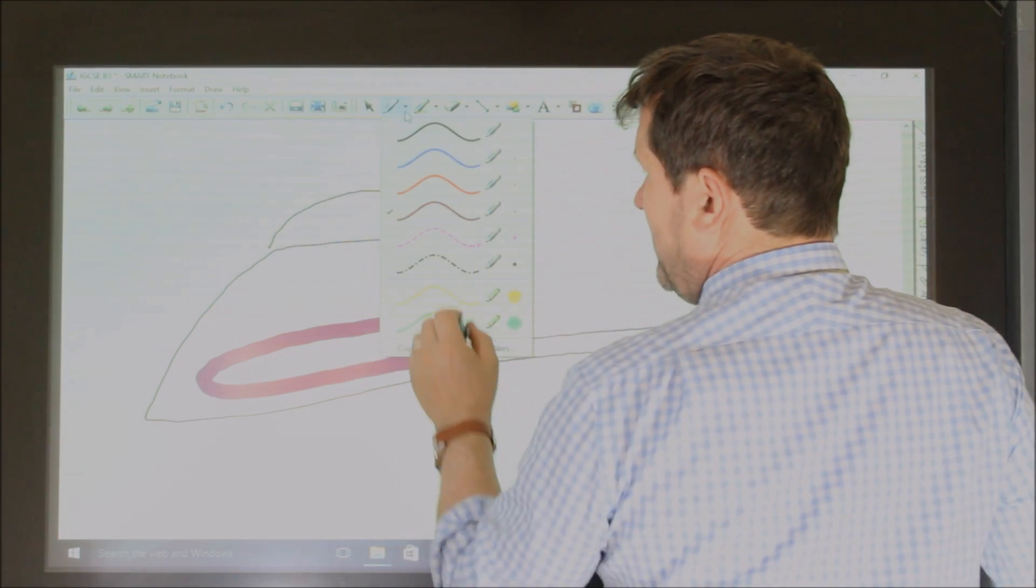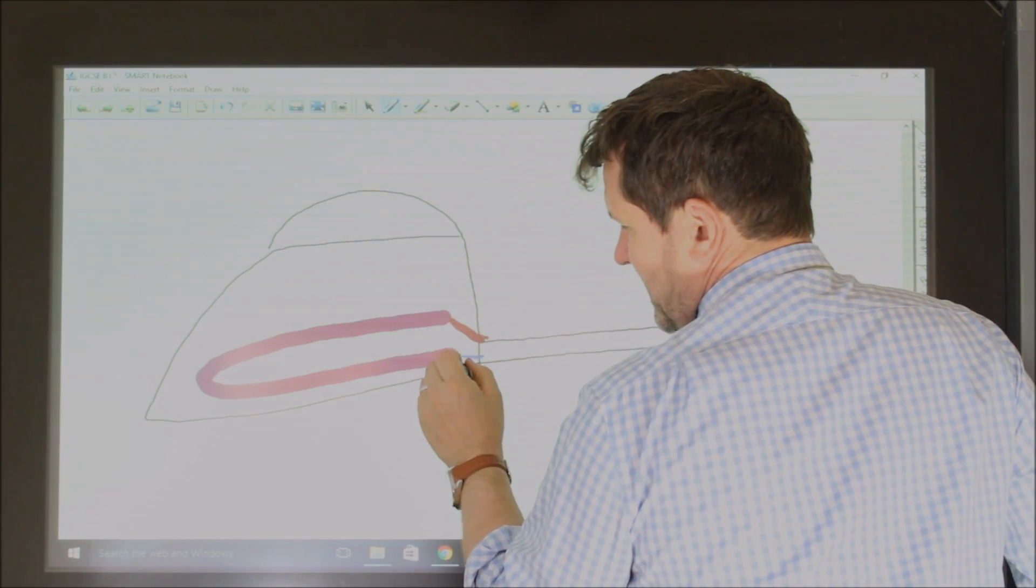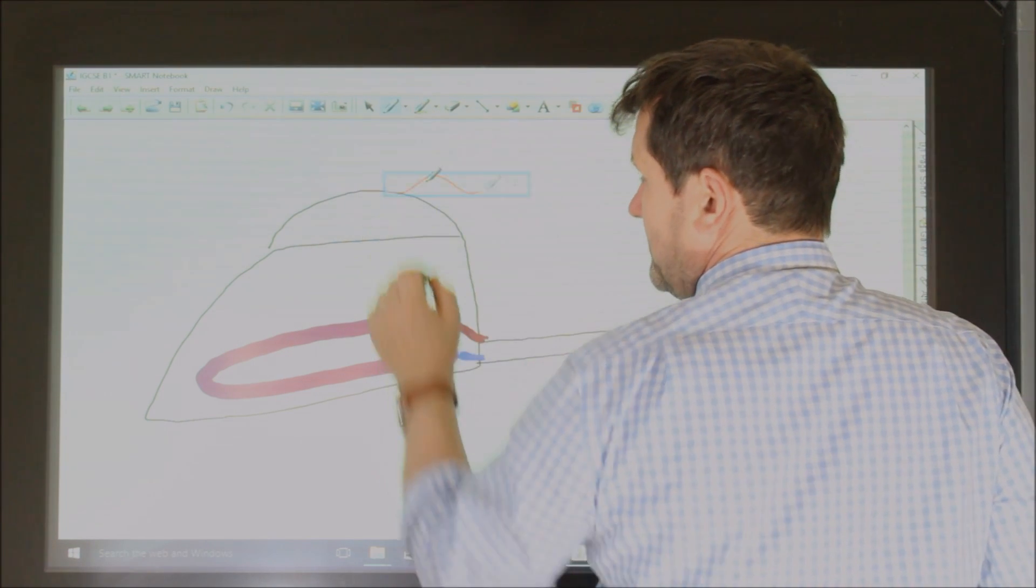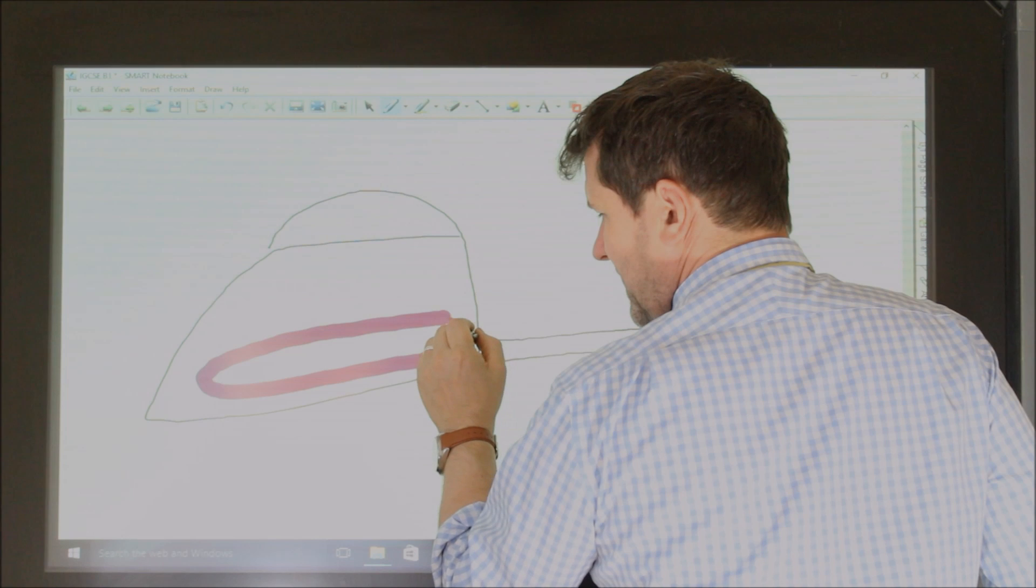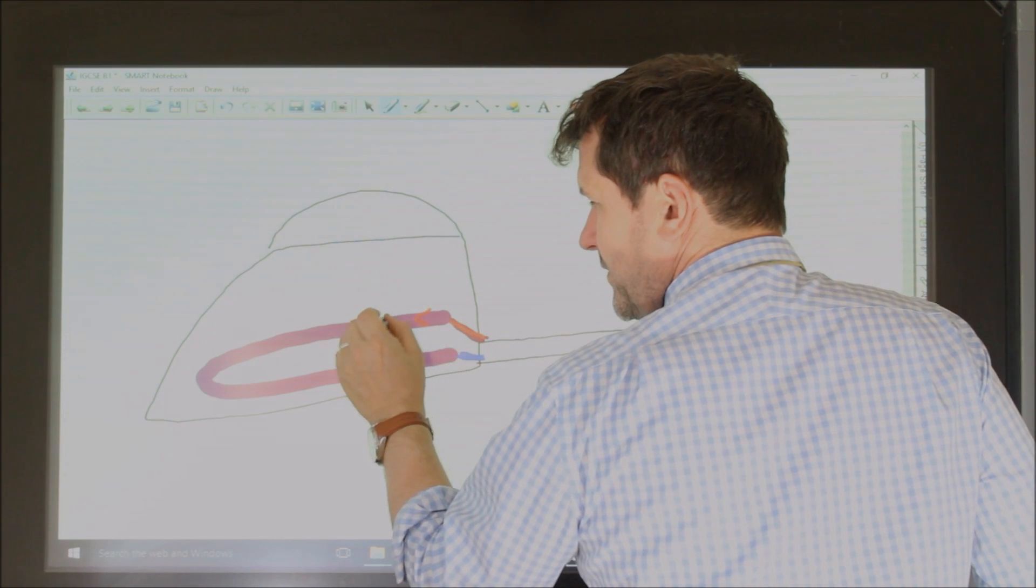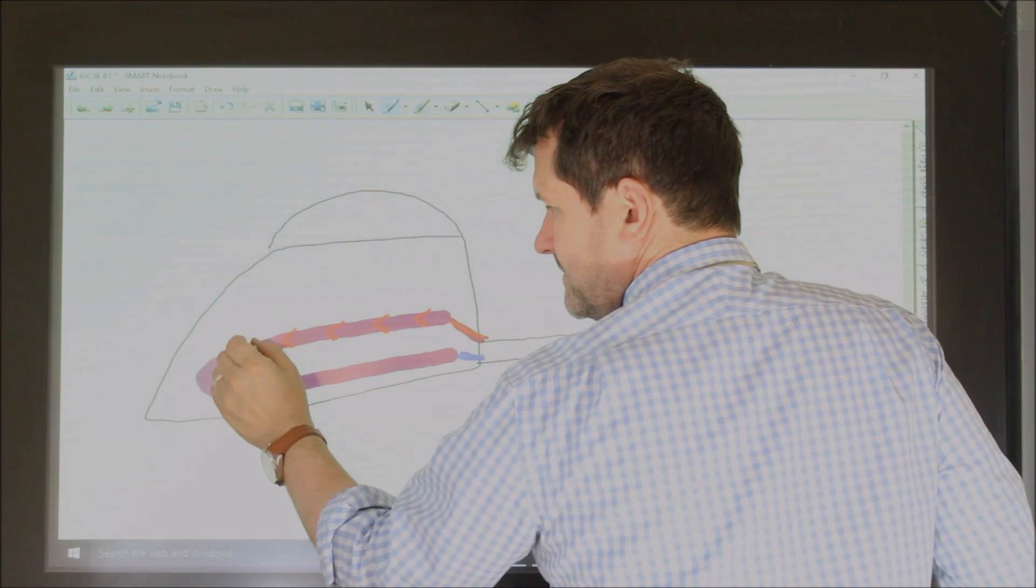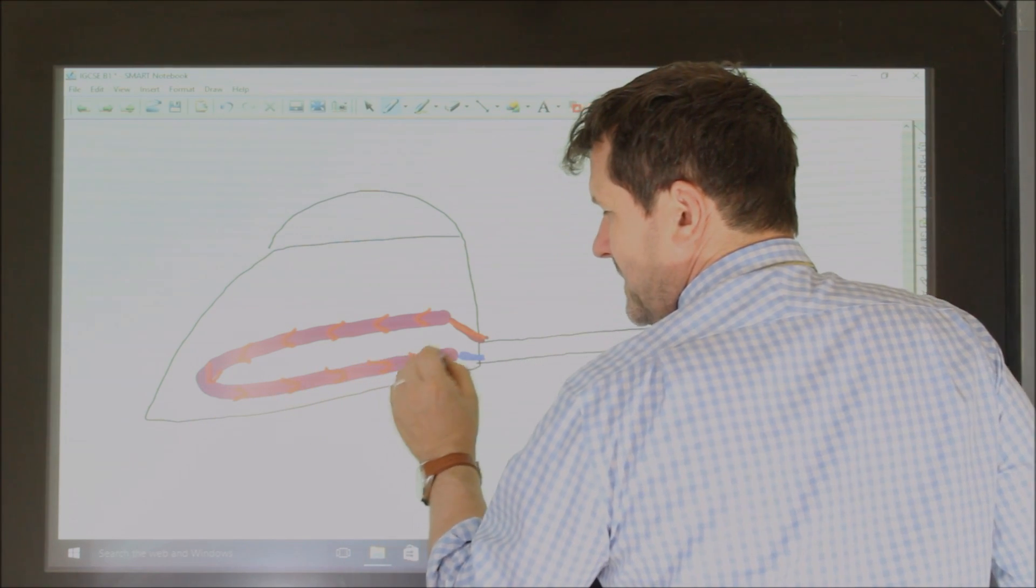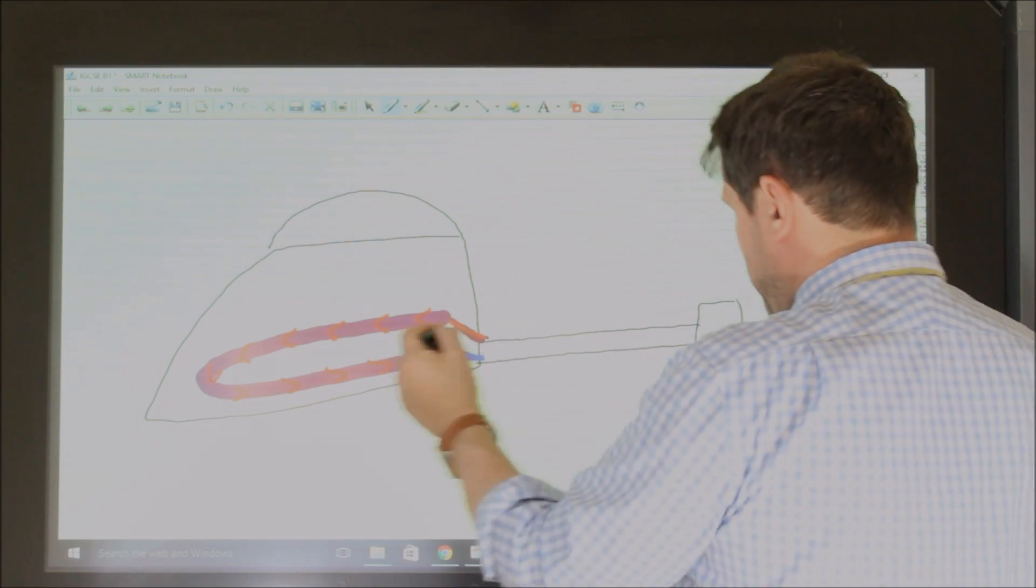And the blue wire is connected to the filament. So the electricity comes in and it goes down the live wire, through the filament, as it does so it creates lots and lots and lots of heat, and it goes back down the neutral wire back to the plug.